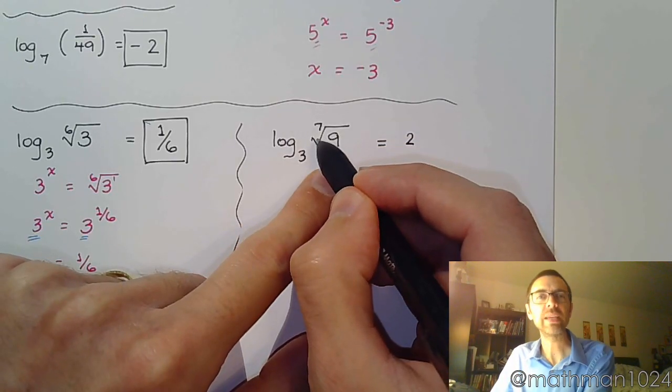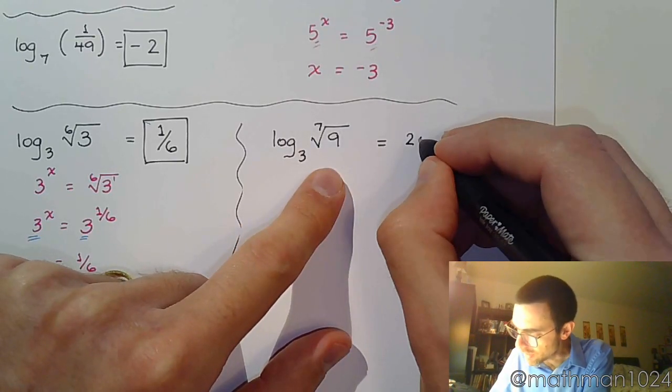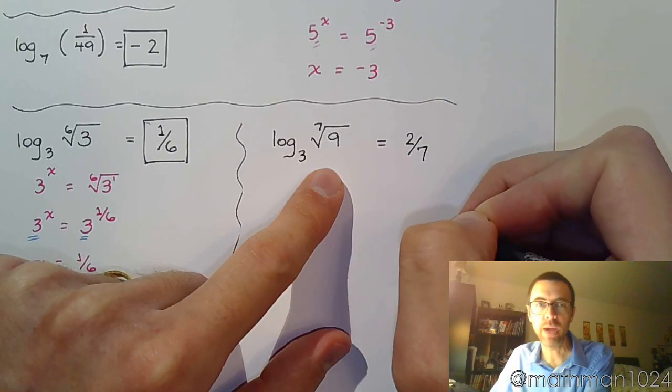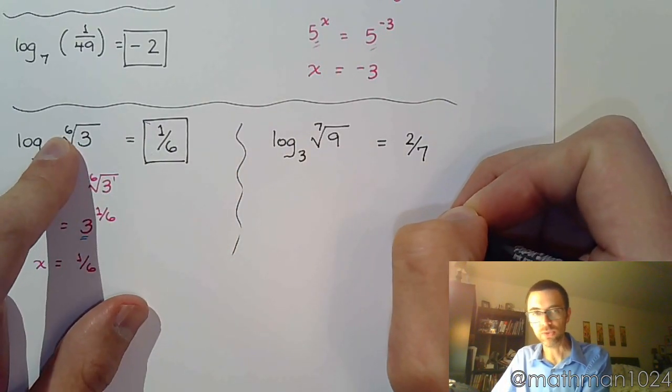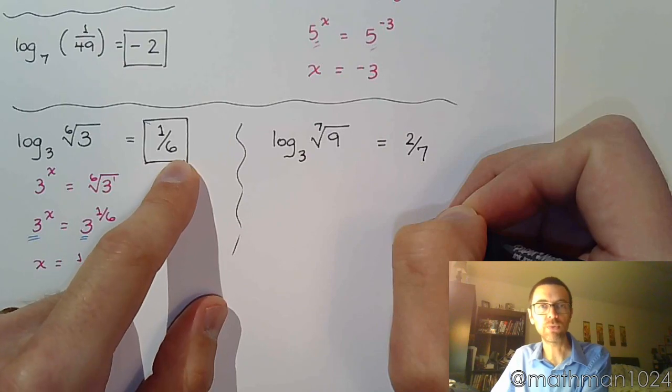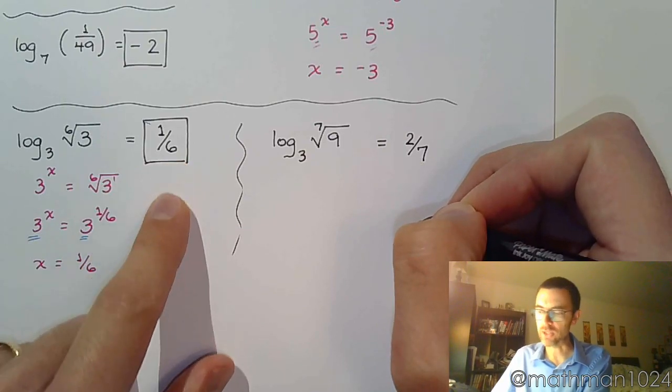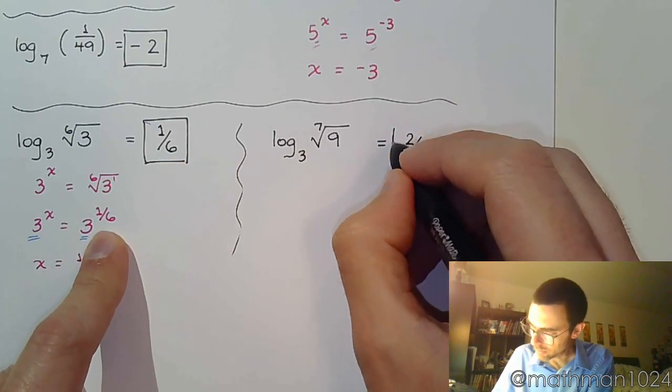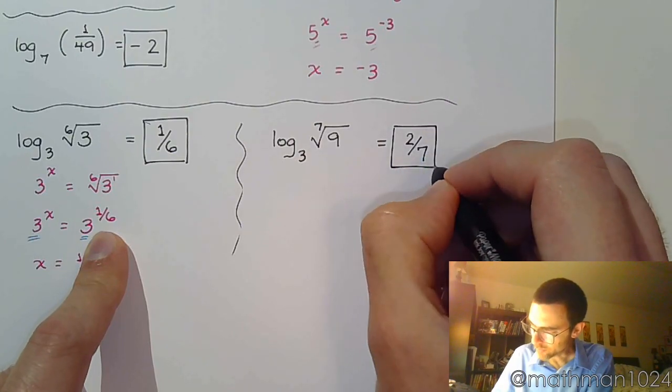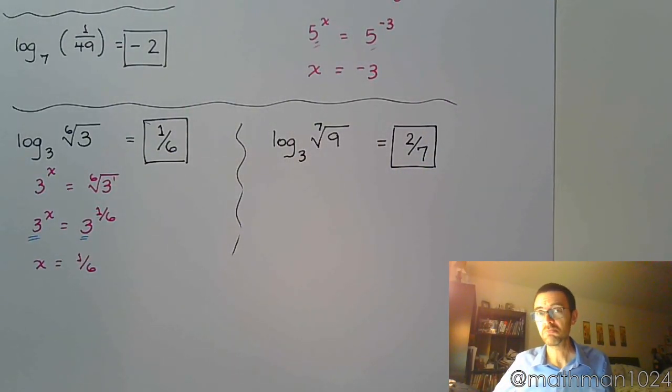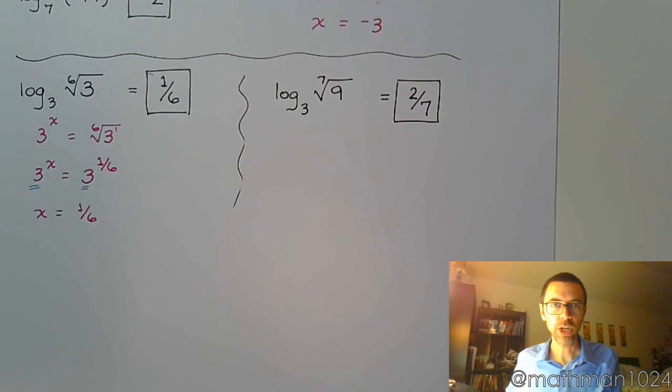Well, what about the root? What about the index of 7? That would become the denominator of your power, just like we saw over here. This root became the denominator for the answer, which, again, is connected to the power. And that's it. Right? You just have to know your powers, and you're going to be okay.